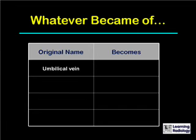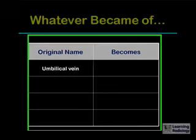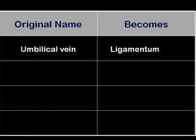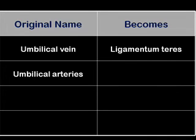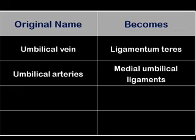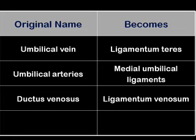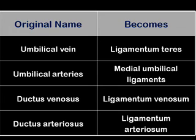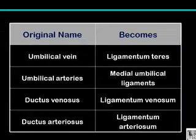This grid helps you remember the names of the original fetal vessels and what they become in adult life. The umbilical vein becomes the ligamentum teres; the umbilical arteries become the medial umbilical ligaments; the ductus venosus becomes the ligamentum venosum; and the ductus arteriosus becomes the ligamentum arteriosum.